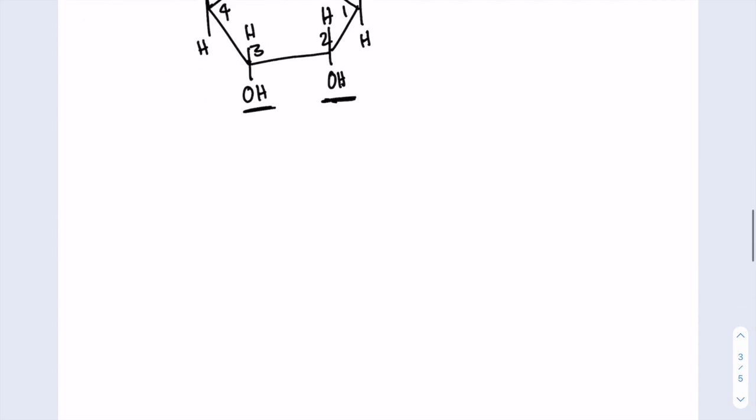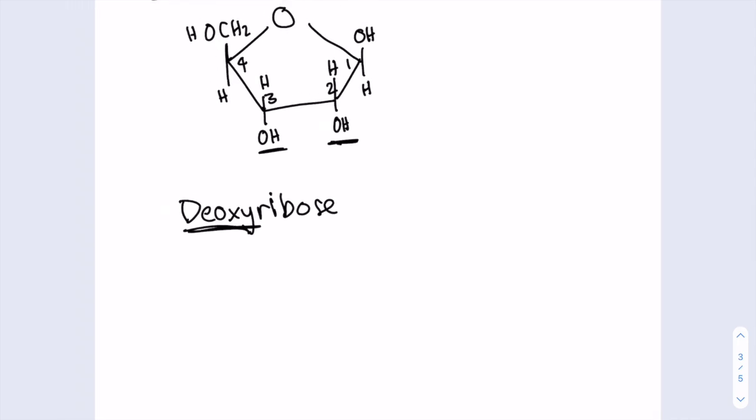So the second nucleic acid that we need to be able to draw is deoxyribose. And as the name suggests, this is deoxy, meaning without an oxygen molecule. Without an oxygen molecule specifically in this OH group, meaning that it's actually just two hydrogens bonded to the carbon.